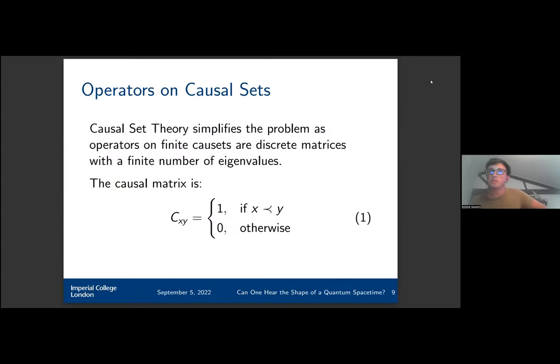Because we're interested in spectral geometry, we need to find operators. Thankfully, we can define operators on causal sets, and actually it simplifies our problem because on finite causal sets, operators are discrete matrices with a finite number of eigenvalues. So instead of having to solve the eigen system of a differential operator, we can just solve it for a matrix.